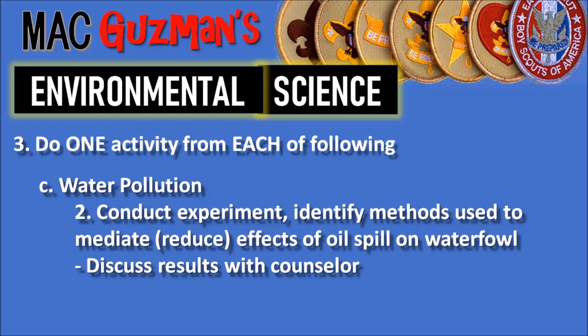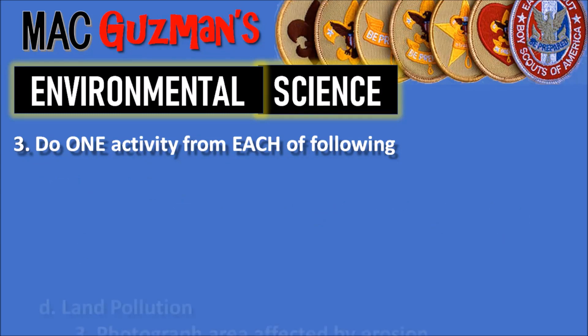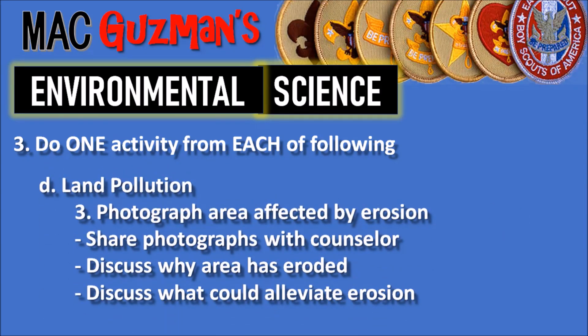For Water Pollution, I chose number 2, which is to conduct an experiment and identify methods used to mediate and reduce the effects of oil spills on waterfowl, and discuss results with your counselor. For Land Pollution, I chose the third option: photograph an area affected by erosion, share the photograph with your counselor, discuss why the area has eroded, and discuss what could alleviate the erosion.